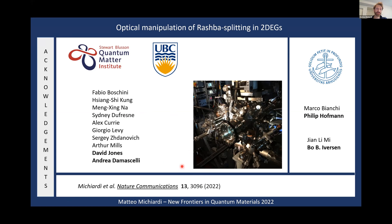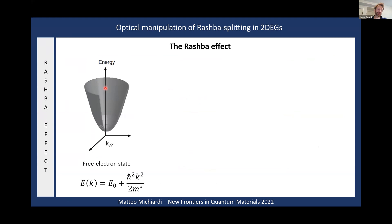Because I'm going to talk about Rashba spin-orbit coupling and show a lot of dispersion of two-dimensional electron gases, I'll start there. We're going to look at the dispersion — energy versus momentum — for a two-dimensional electron gas. This is essentially a free electron state that looks like a parabola in two dimensions. Normally, these bands are spin degenerate.